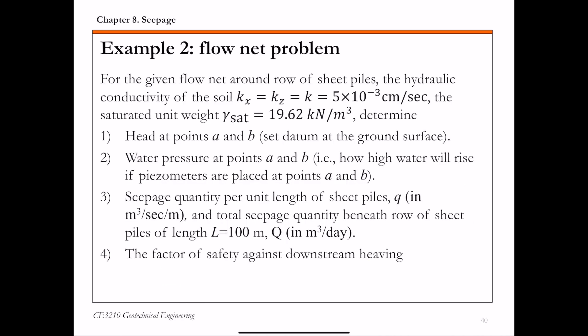For this example, you are also given the permeability of the soil. Kx and Kz are equal, so this is isotropic material. The saturated unit weight of the soil is also given, which you will need to calculate the factor of safety. We're going to calculate total head at points A and B, water pressure at A and B, seepage quantity per unit length (small q), total seepage quantity beneath the row of sheet piles of length L equals 100 meters (capital Q), and finally the factor of safety.